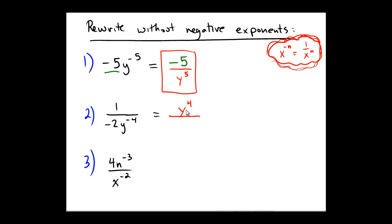Notice that the number, negative 2, is not being raised to any exponent. It does not have a little exponent on it at all. So the negative 2 is going to remain in the bottom.